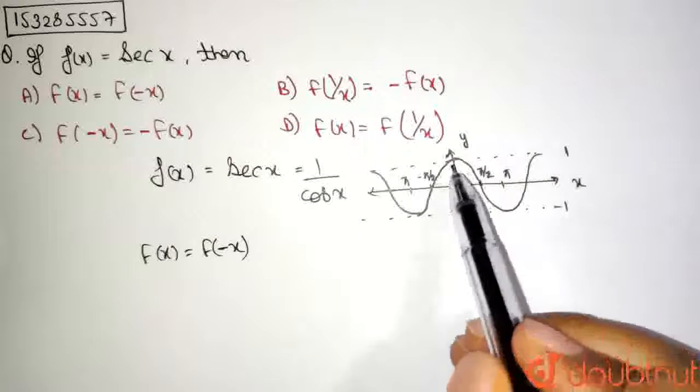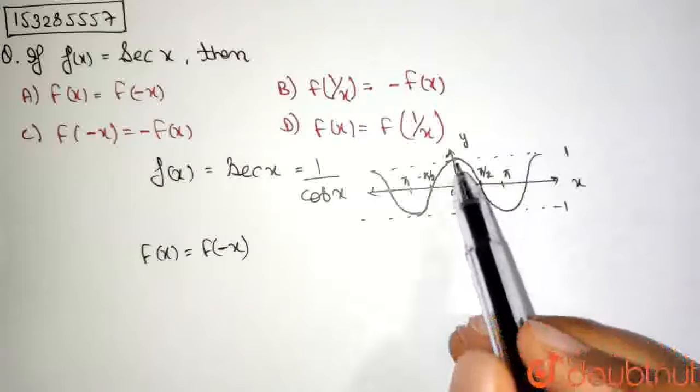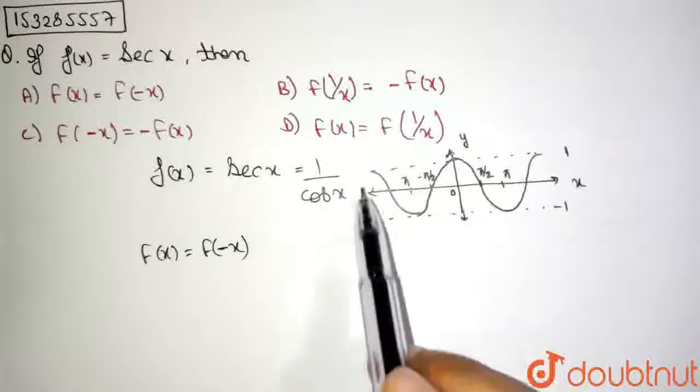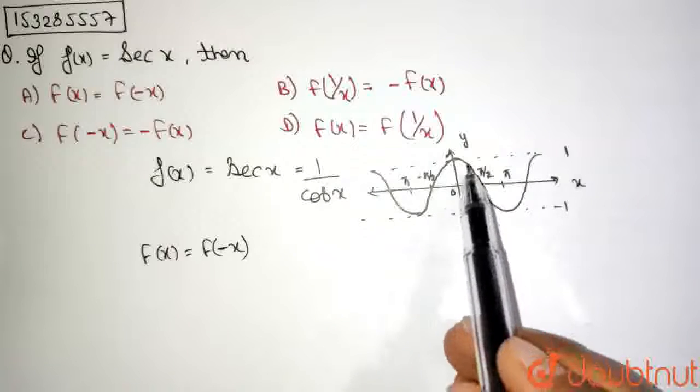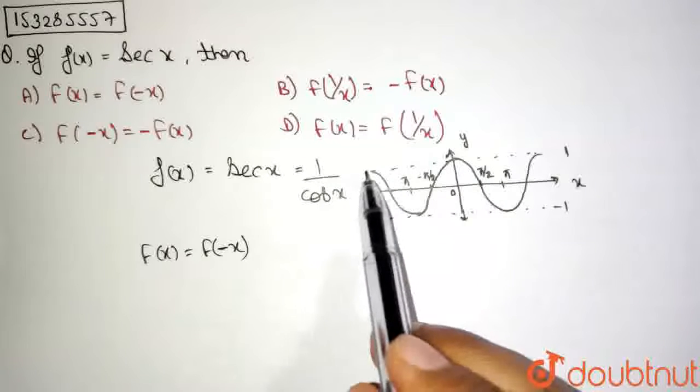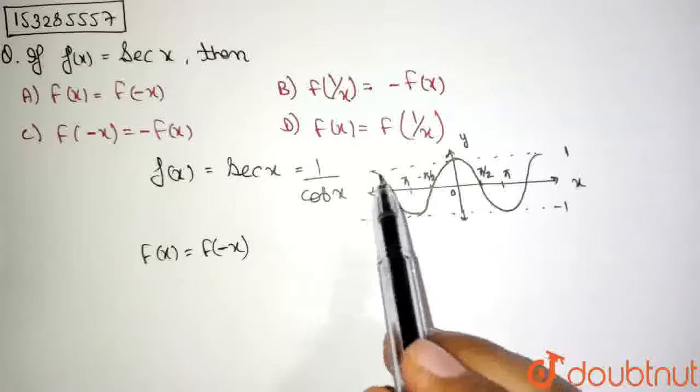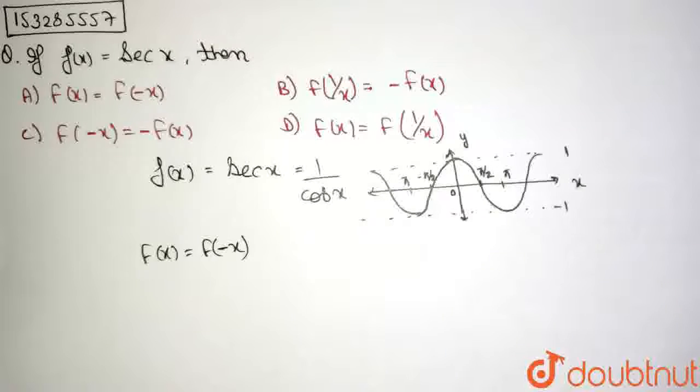That means, whatever is the function on the right-hand side of the y-axis, if I put a mirror over here, the same function is formed on this side. And the superimposition is nothing but what the function already was.